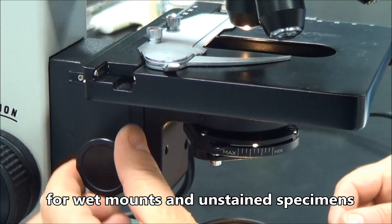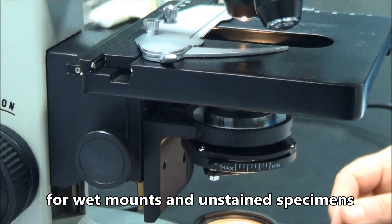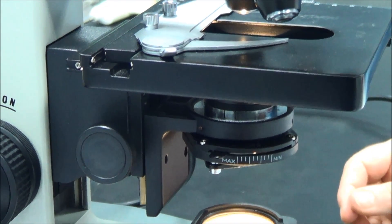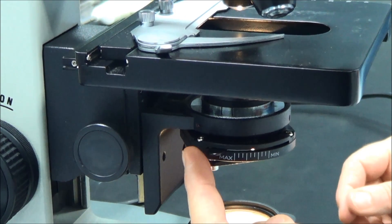For wet mounts and unstained specimens, light may be reduced and contrast optimised by lowering the condenser and adjusting the aperture diaphragm.